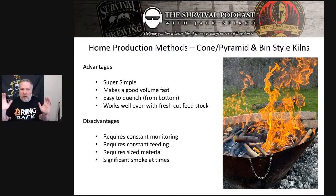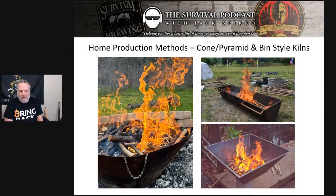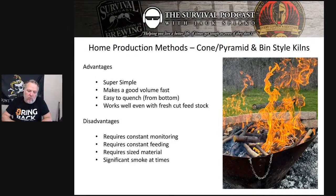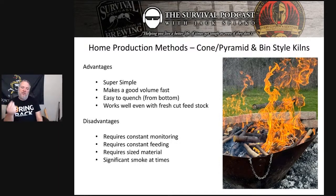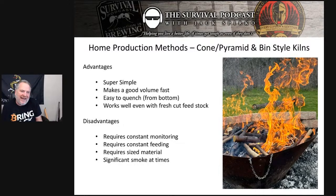The advantages of all of these — because it's a pyramid kiln in the bottom right too, which works the same way — all of these work the same way by robbing oxygen from the bottom by burning it at the top. When you get this going, it's super simple, makes a good volume fast. That relatively small kiln, when I get down to a finished crushed product under a quarter inch in size, I get about eight to ten gallons of biochar from a single burn. That's a very usable quantity.